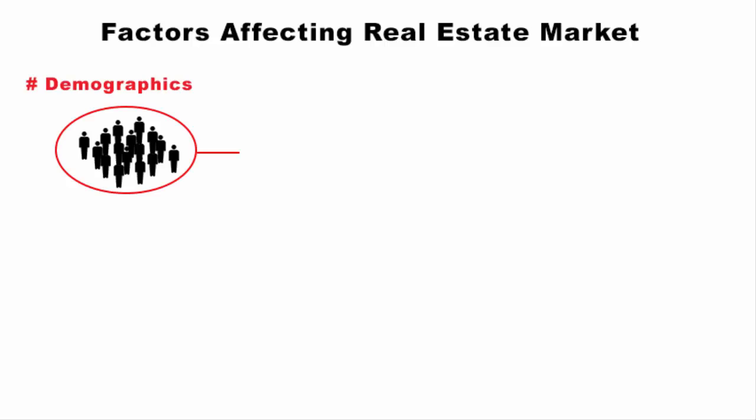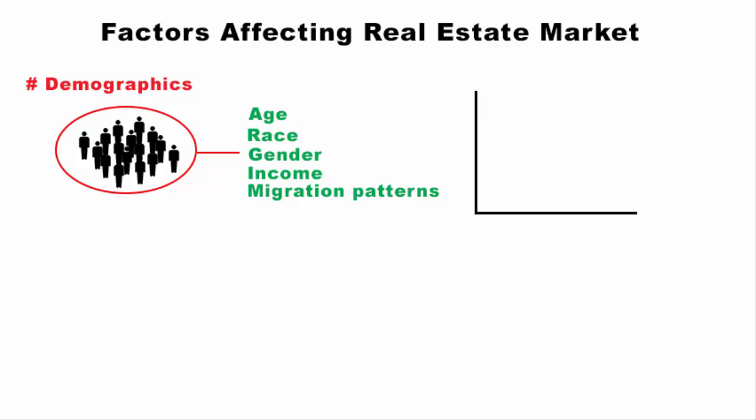Demographics is the data that describes the composition of a population, such as age, race, gender, income, migration patterns, and population growth. At first it may look like it can be easily overlooked, but these statistics affect how real estate is priced and what types of properties are in demand.